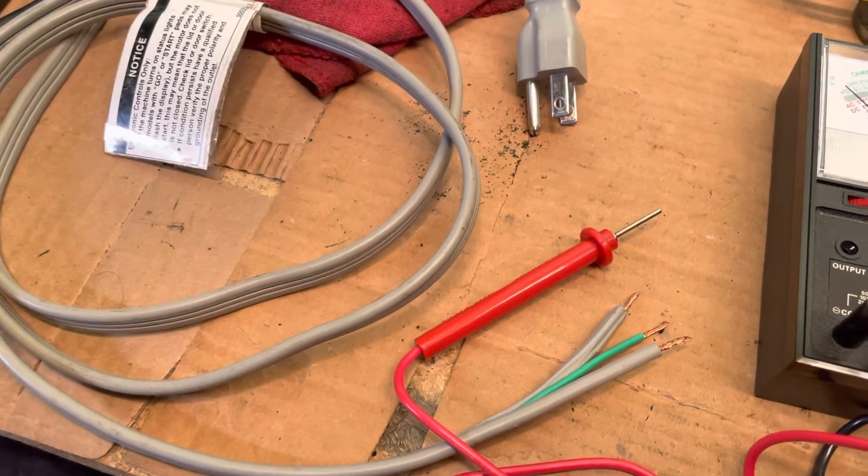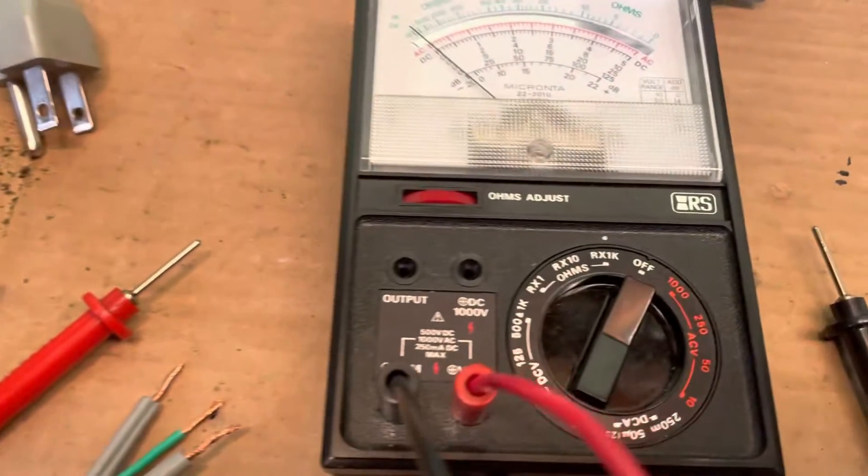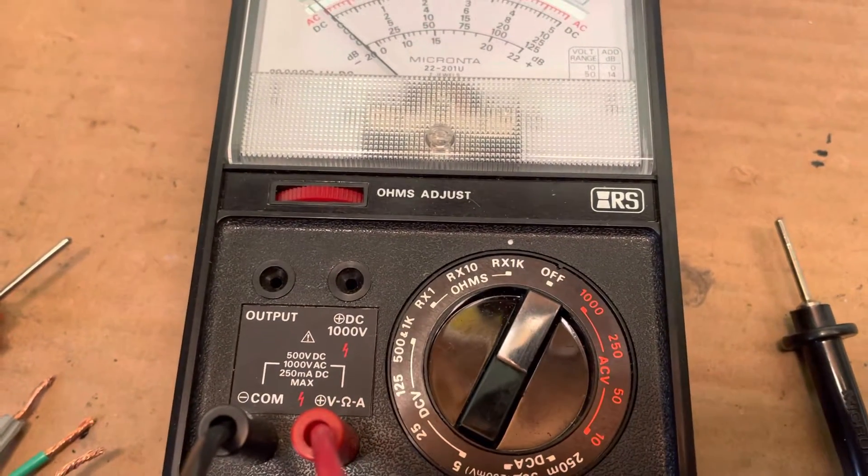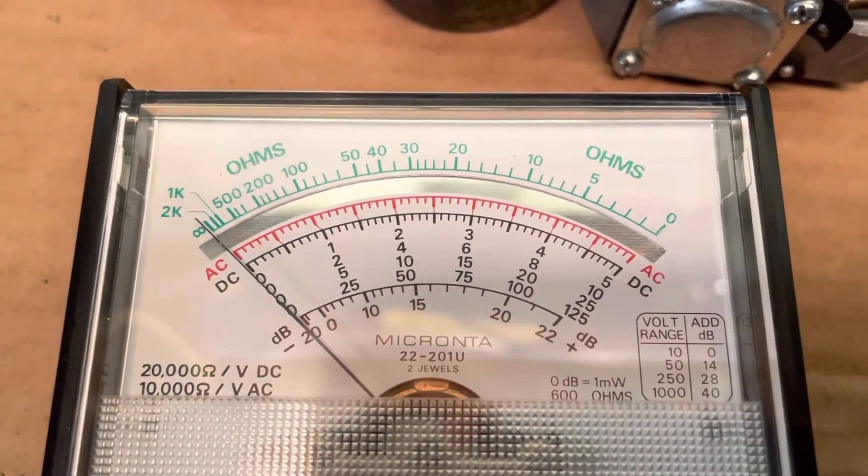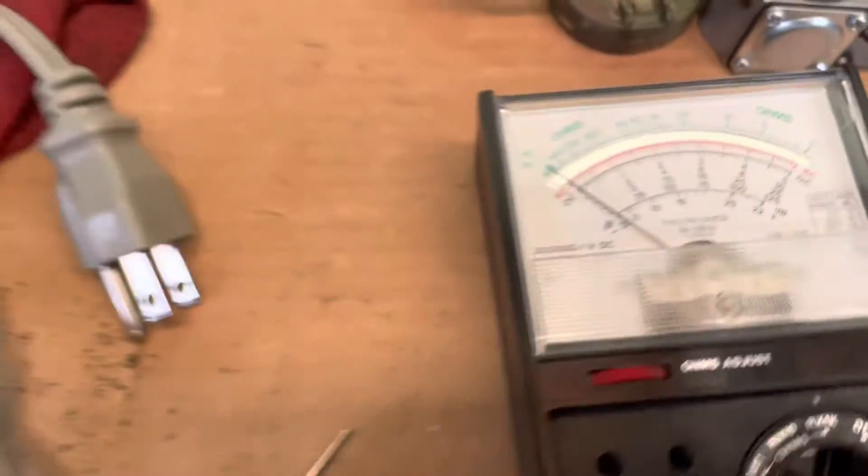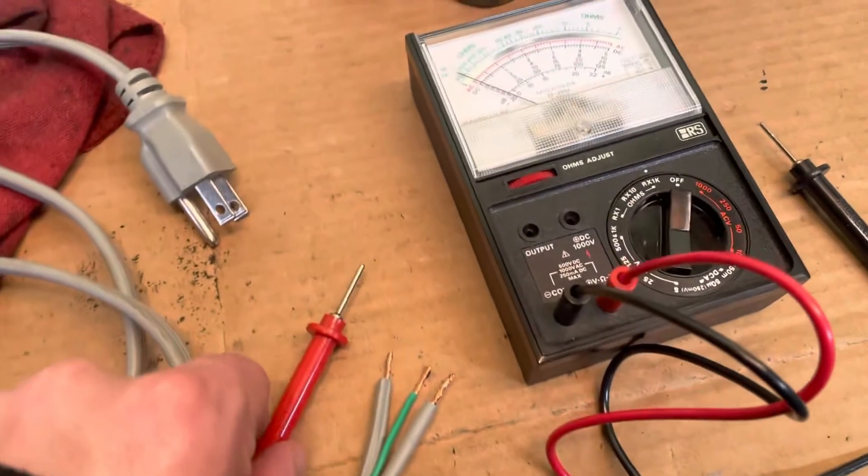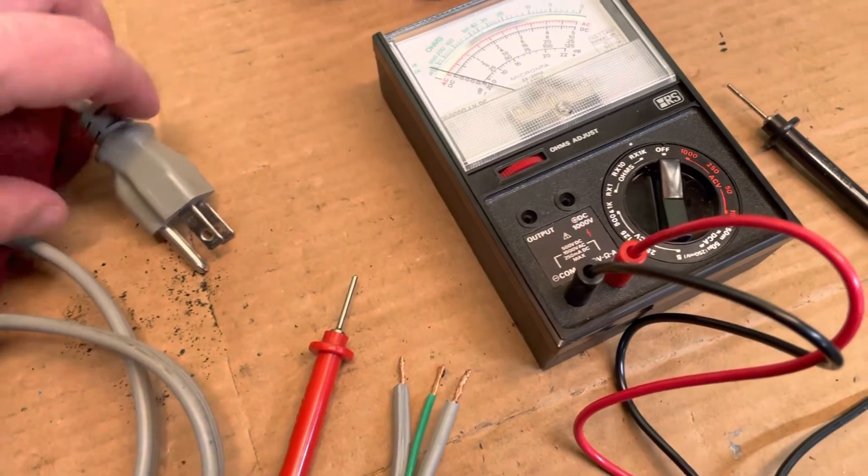You just simply test it with your meter. So I have a meter here, I have it set to the 1k ohms setting, and we're going to use the green scale up top for the ohms. And I'm going to take my positive, but before you do that real quick...